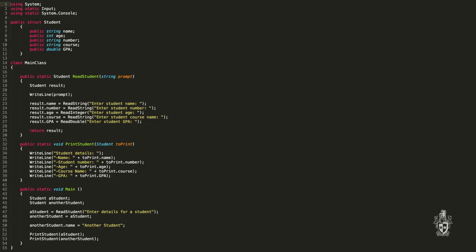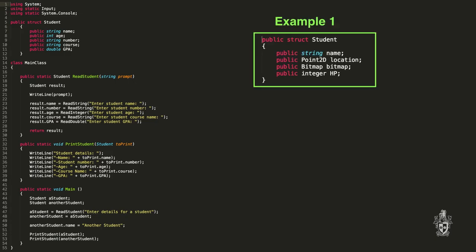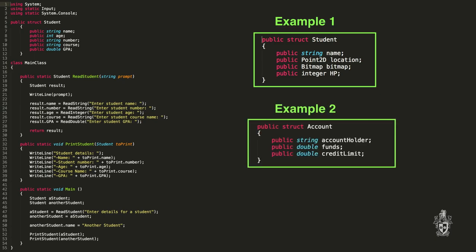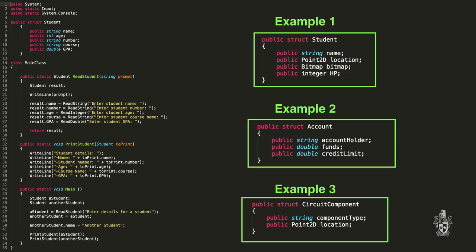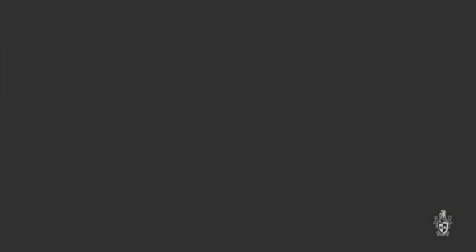Here are a couple of other examples. We have a player, for example, which could store the player's location and score — everything we need to have our player in a computer game. Second, we've got an account example, which could have the account holder's name, total funds remaining, credit limit — everything we need to know about the account. And the last one is a component from a circuit diagram, which has the type of component and its position in the diagram.